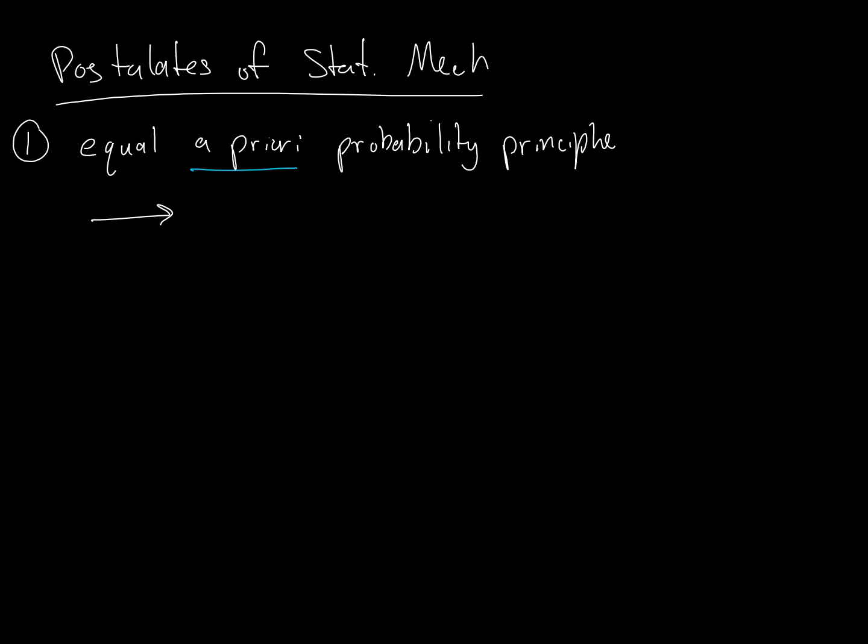So with the last little bit of class, we're going to now talk about the fundamental foundational assumptions that we have to believe is true in order to perform any statistical mechanics calculation. These are the postulates of StatMech. Number one is what we call the equal a priori hypothesis or equal a priori probability principle.